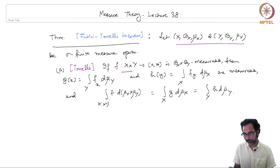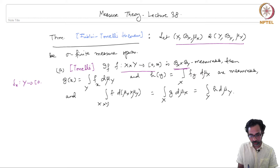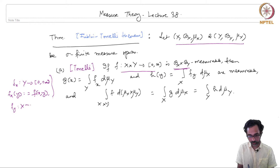If you take a function f which is an unsigned measurable function with respect to the product sigma algebra Bx cross By, then the integral of the function f subscript x — where f_x was a function from y to the non-negative reals defined as f_x(y) = f(x,y) — this was the definition. Similarly, we can define f_y by f_y(x) = f(x,y).